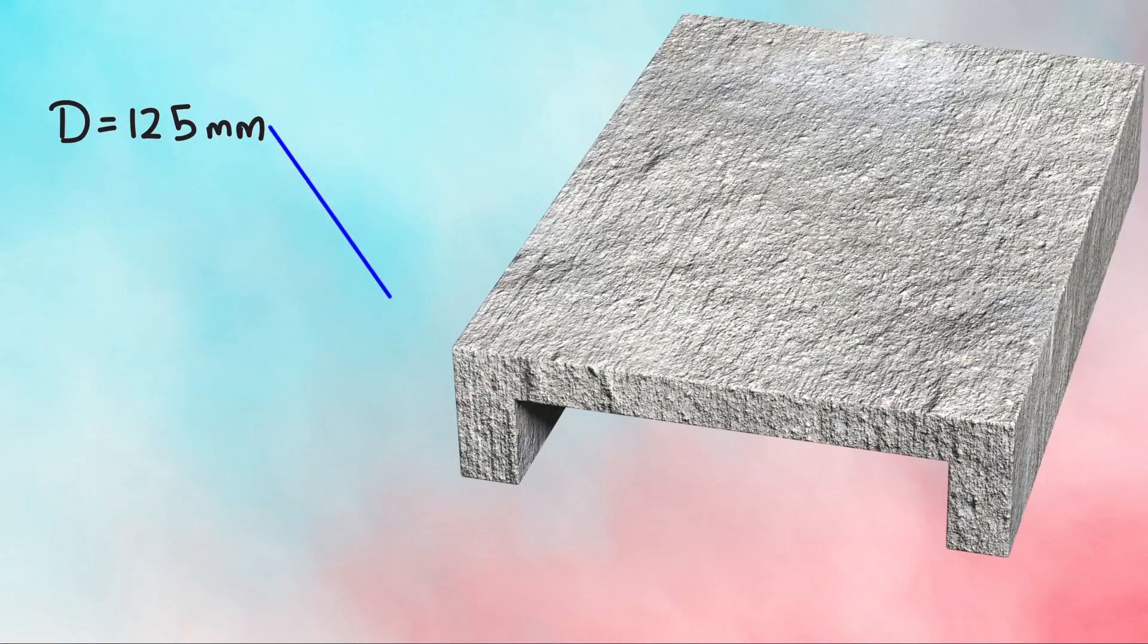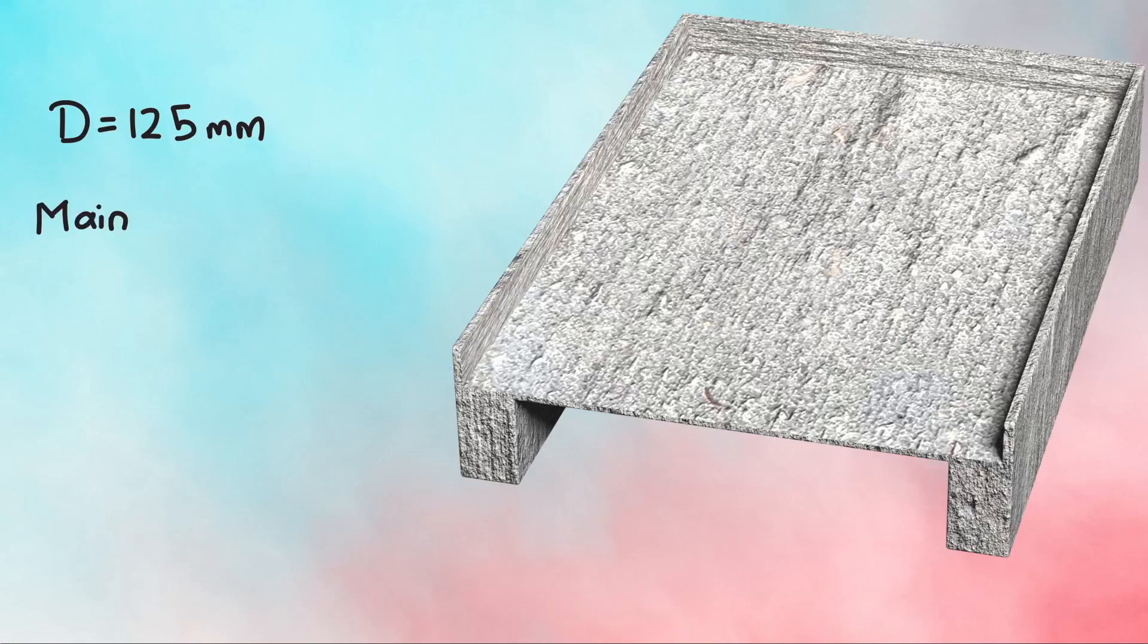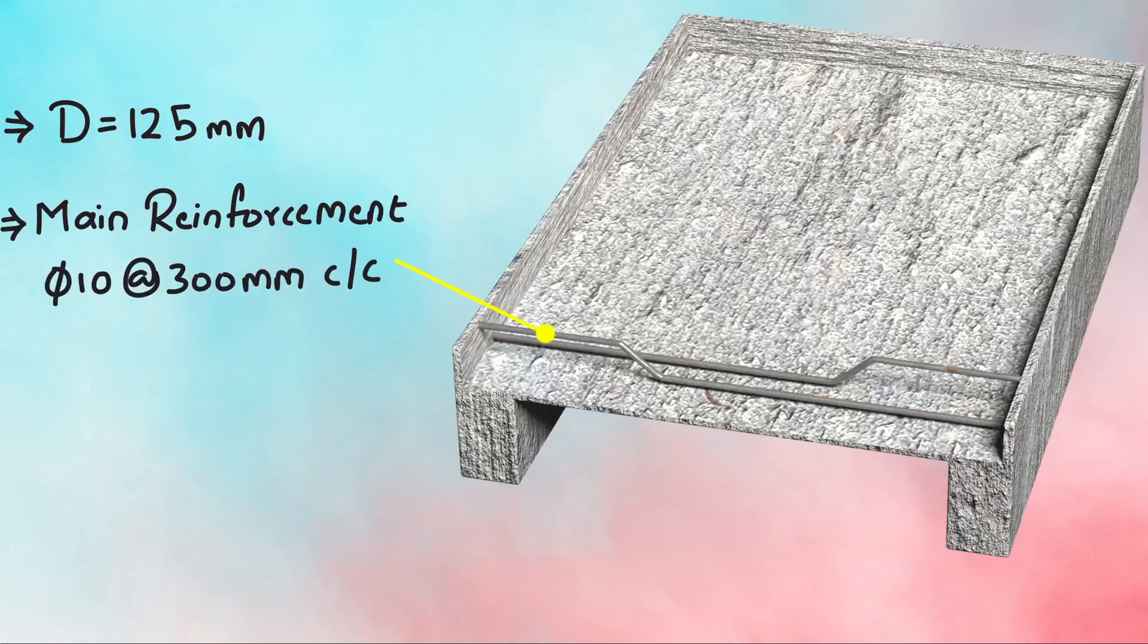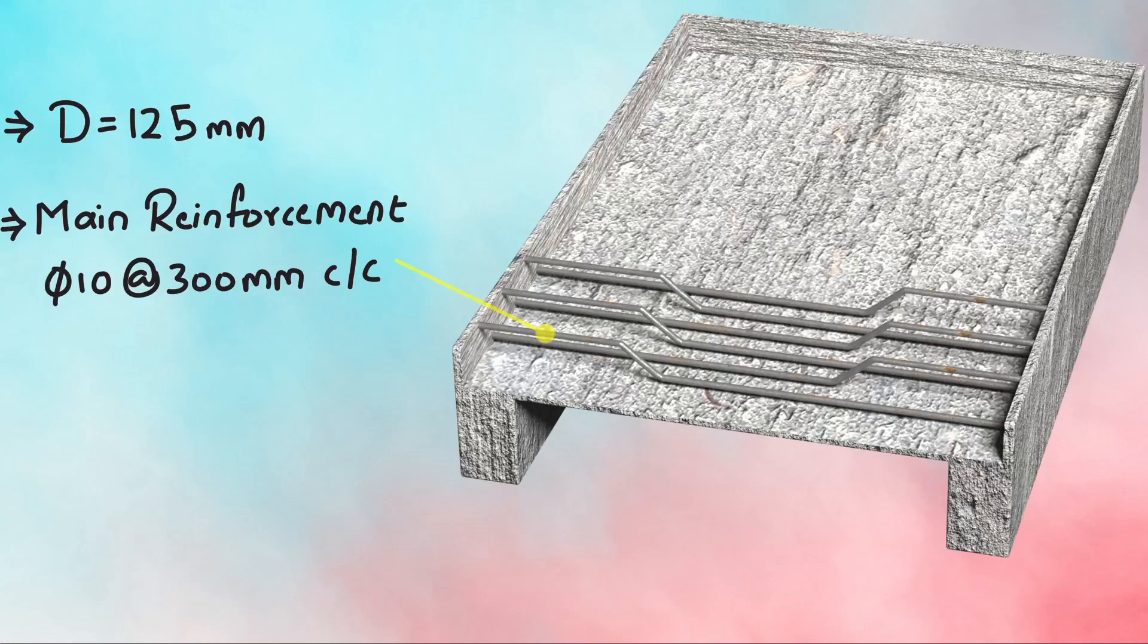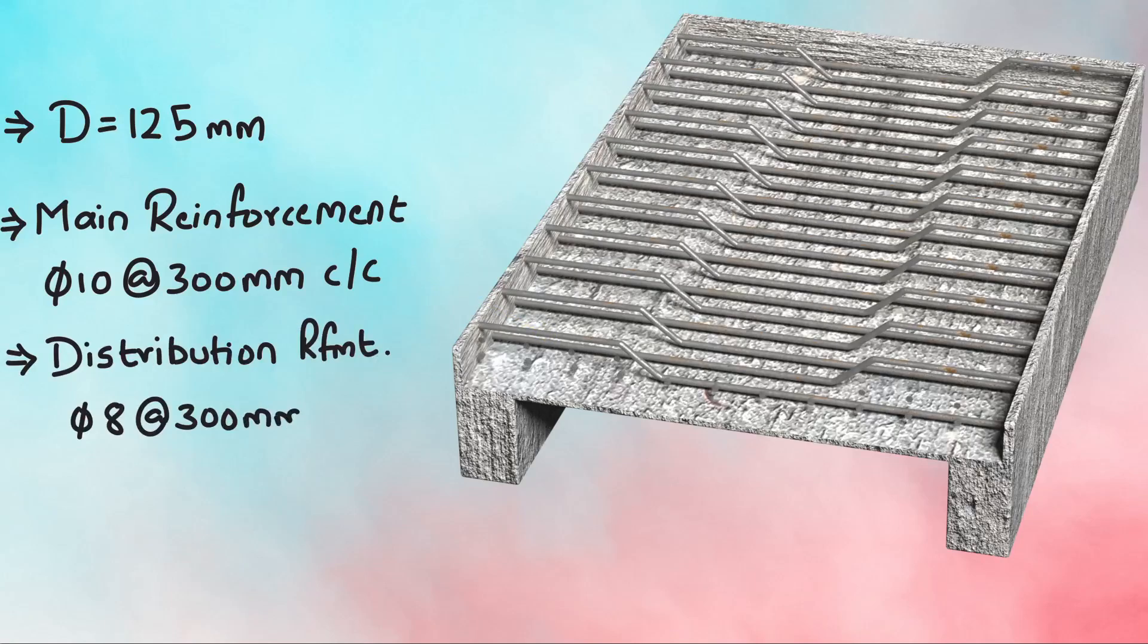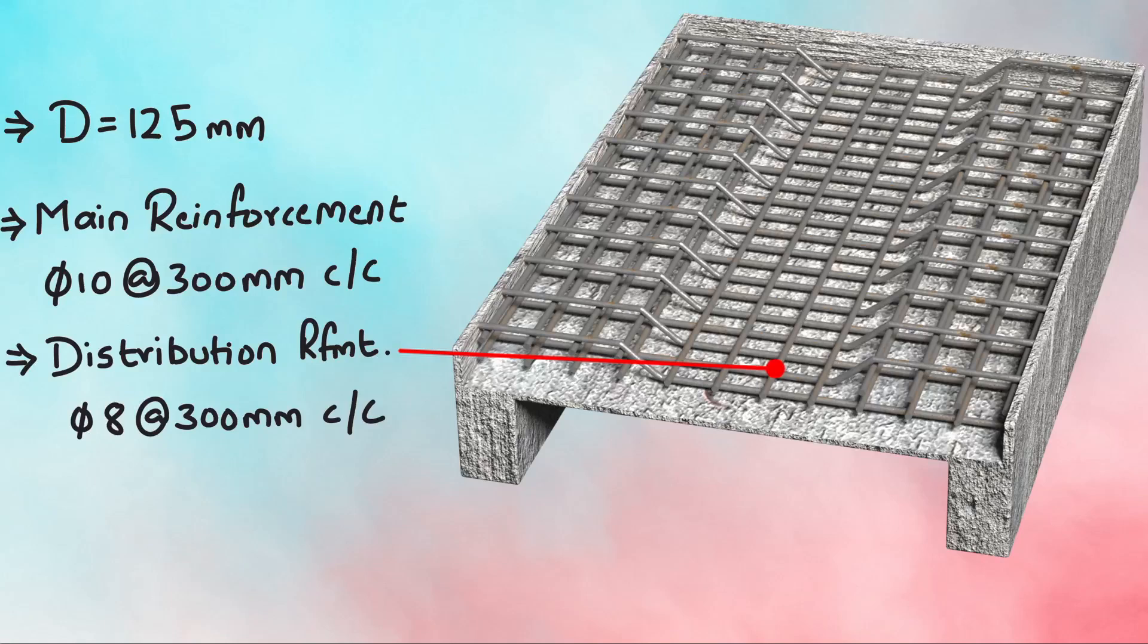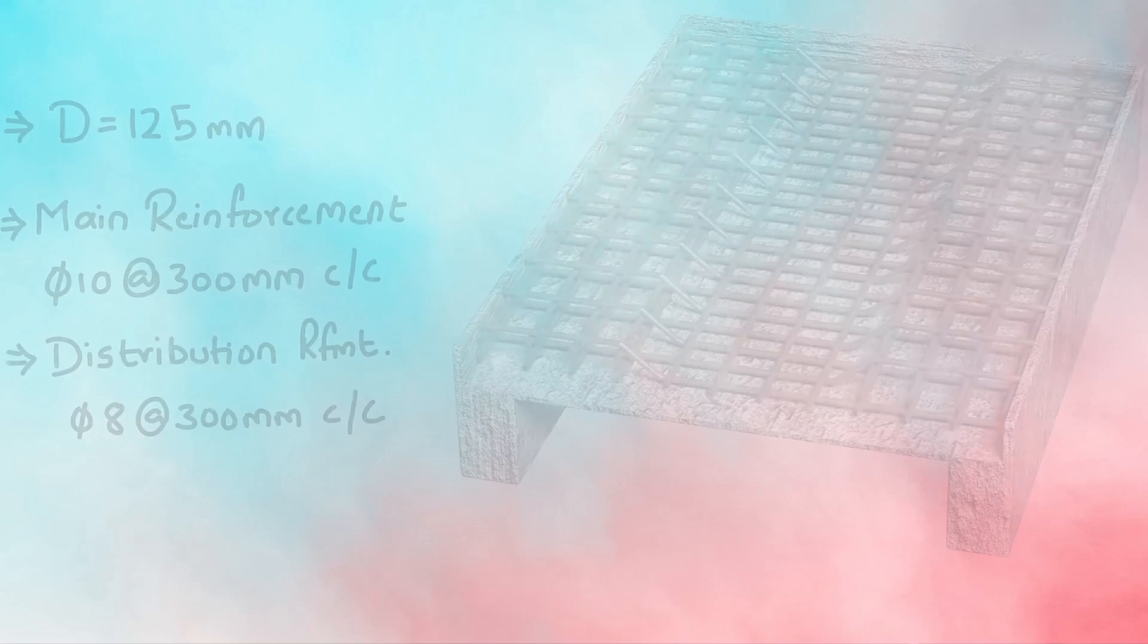So the final step which remains is detailing the slab. As per our calculations, the total depth of slab is 125 mm. The main reinforcement is Tor 10 at 300 mm center to center, laid along the shorter span of the slab and alternately bent up, while the distribution steel is Tor 8 at 300 mm center to center, which is laid along the longer span of the slab. So with this, our design of one-way RCC slab is complete as per IS 456-2000. You can continue watching the playlist from here and YouTube thinks this video is the best fit for you.